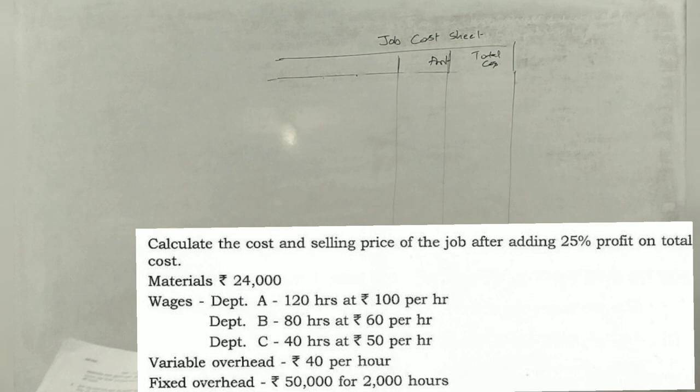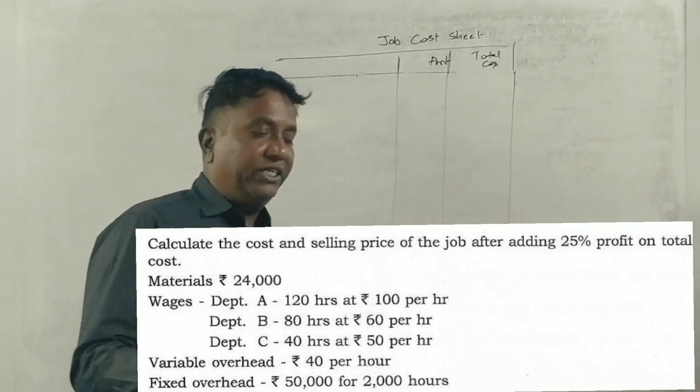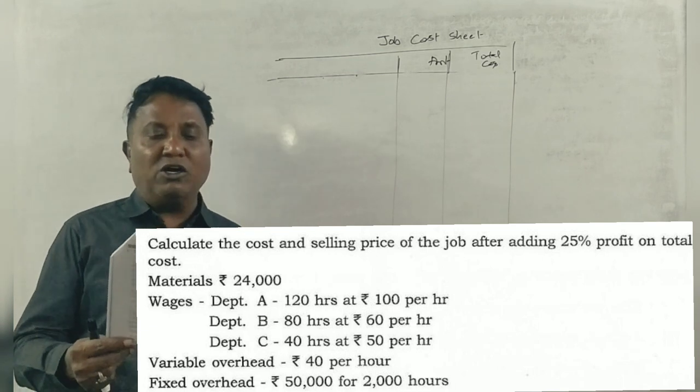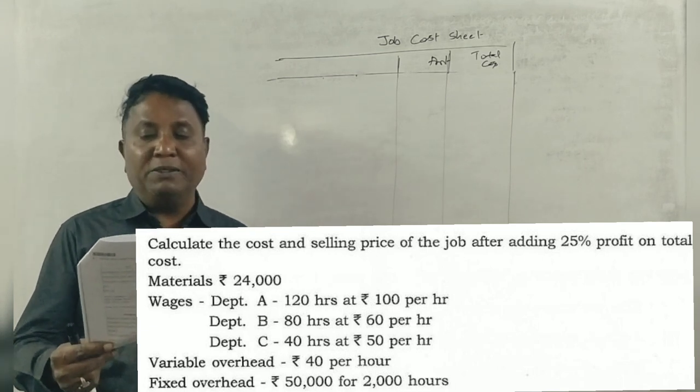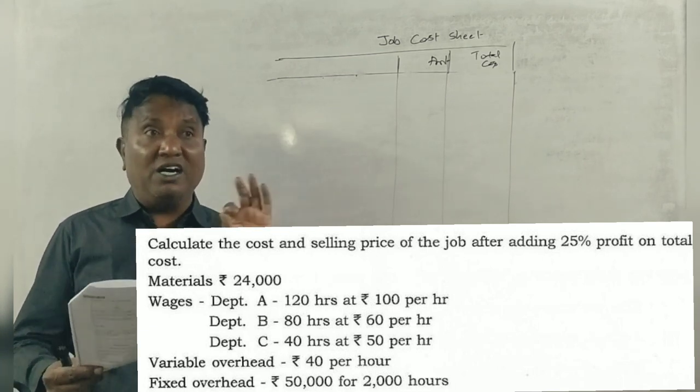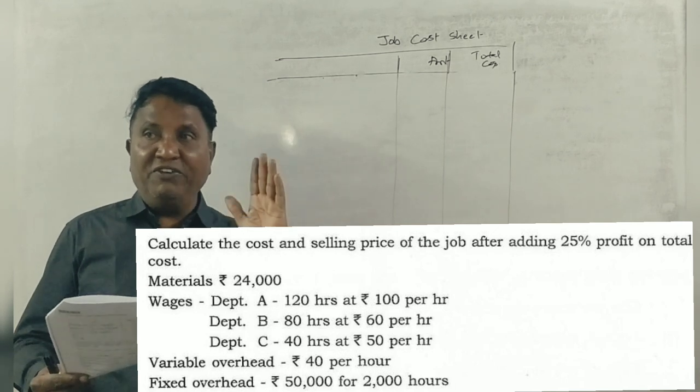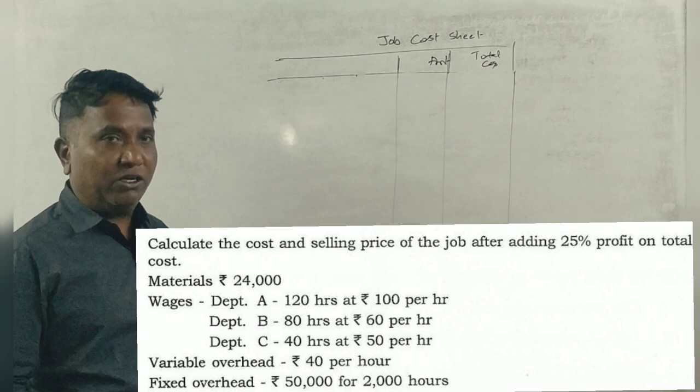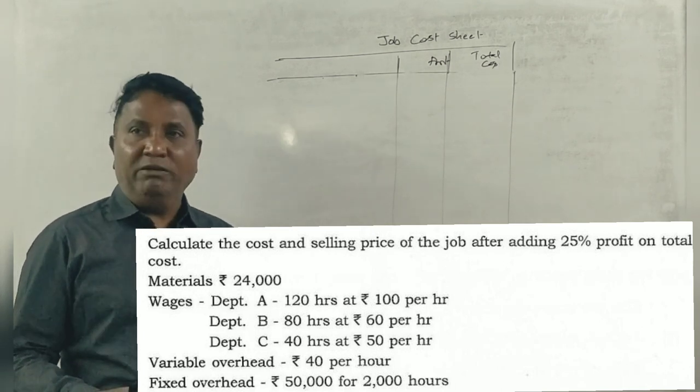This is a 2019 question about preparing a cost sheet for a job. Calculate the cost and selling price of the job after adding 25% profit on total cost. 25% profit on total cost - not 25% direct profit on total cost, but profit based on sales.